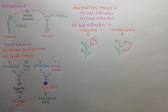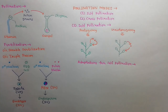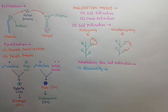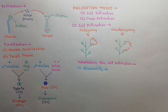To make self-pollination successful, plants must have certain adaptations. The first adaptation is bisexuality. For self-pollination, both male and female parts must be found in the same flower. Sometimes plants having unisexual flowers also show some self-pollination, as in maize.